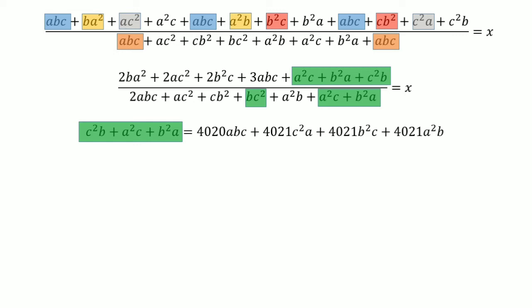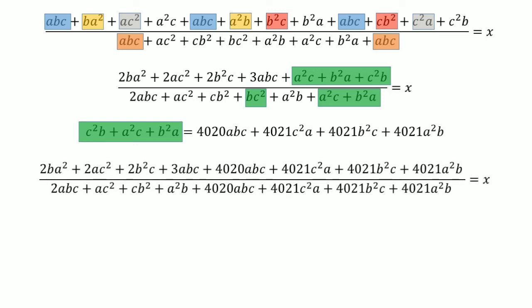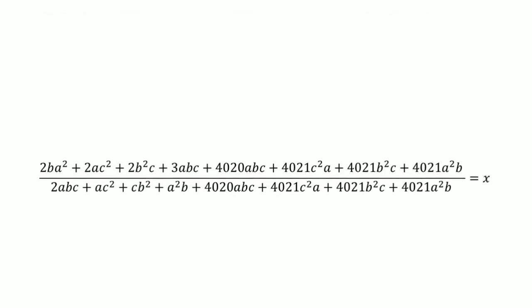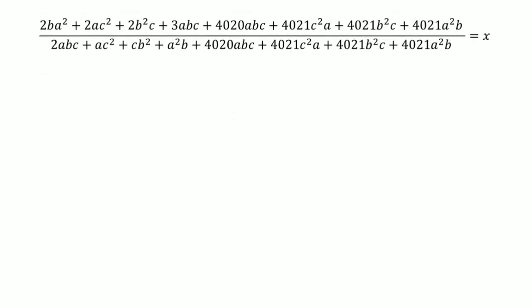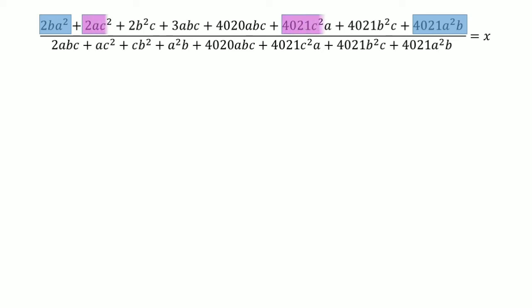Substituting this value into our expression, we get a new form, and from here we can start to see the final answer. We now find common terms: 2BA squared plus 4021 A squared B, similarly 2AC squared plus 4021 C squared A, then 2B squared C plus 4021 B squared C, and finally 3ABC plus 4020 ABC.